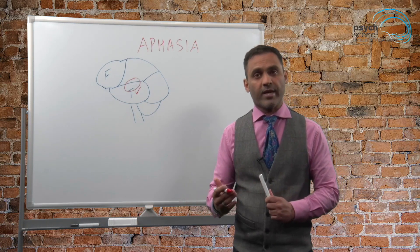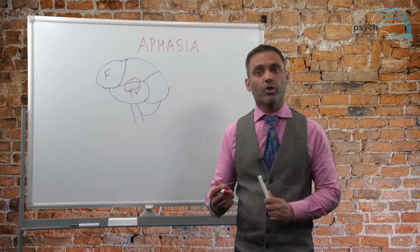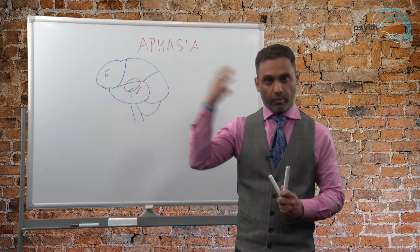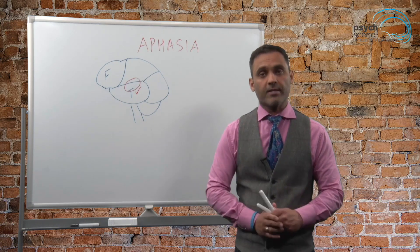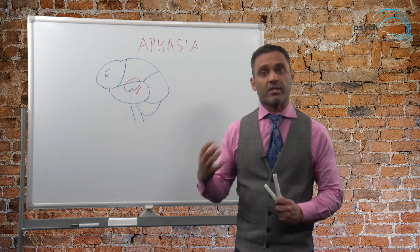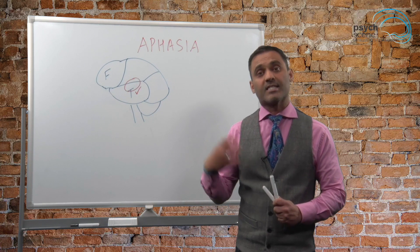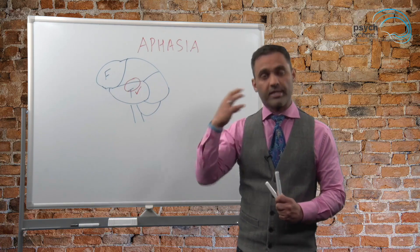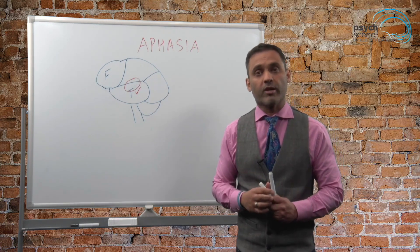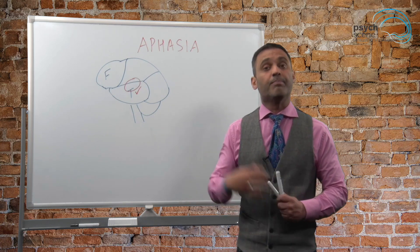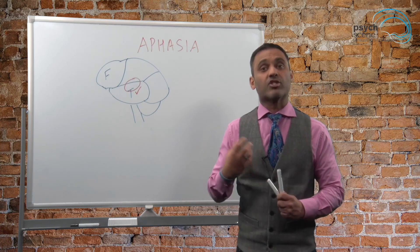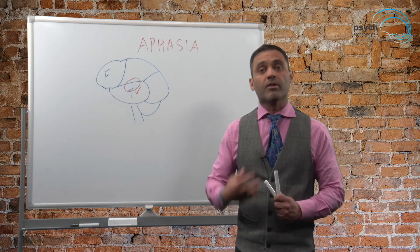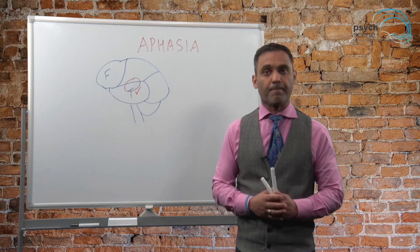Wernicke's aphasia is also known as receptive aphasia, because we're obviously receiving things. It's known as a sensory aphasia — we're sensing the sentences that we're hearing. It's also known as fluent aphasia.